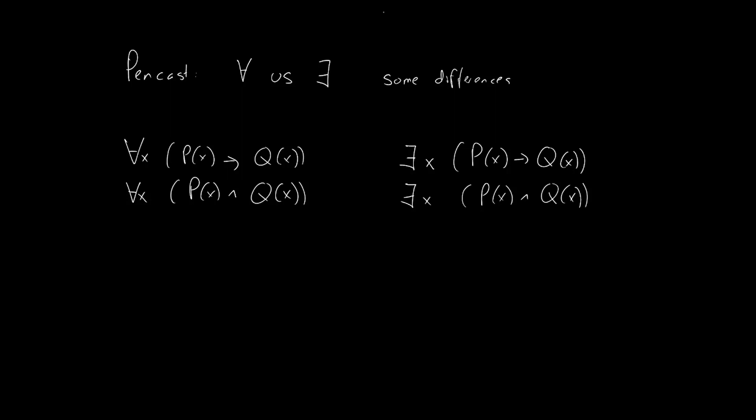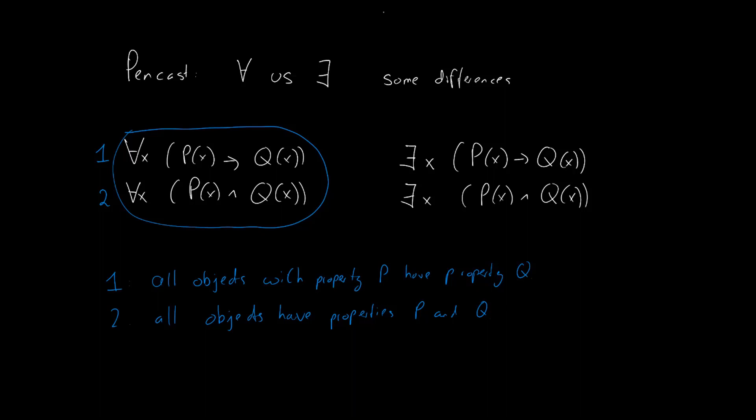Let's take a look at the translations of these four statements. The first one translates to: for all objects x, if x has property P, then x has property Q as well. Hopefully, you realize that this is quite different from statement 2, which says that for all x, x has both the property P and the property Q.